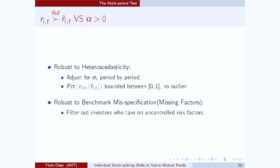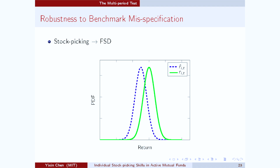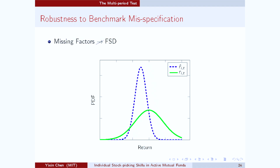Another important property of first-order stochastic dominance is that it develops robustness against benchmark misspecification. The reason is that first-order stochastic dominance is a requirement on the entire shape of the distribution. Suppose we have an investor who is truly skilled at picking stocks — then he should be able to shift the return distribution to the right without changing its shape, so stock picking leads to first-order stochastic dominance. But suppose the investor is also taking on uncontrolled risk factors — then he's going to change both the mean and the shape of the return distribution, thereby violating first-order stochastic dominance.